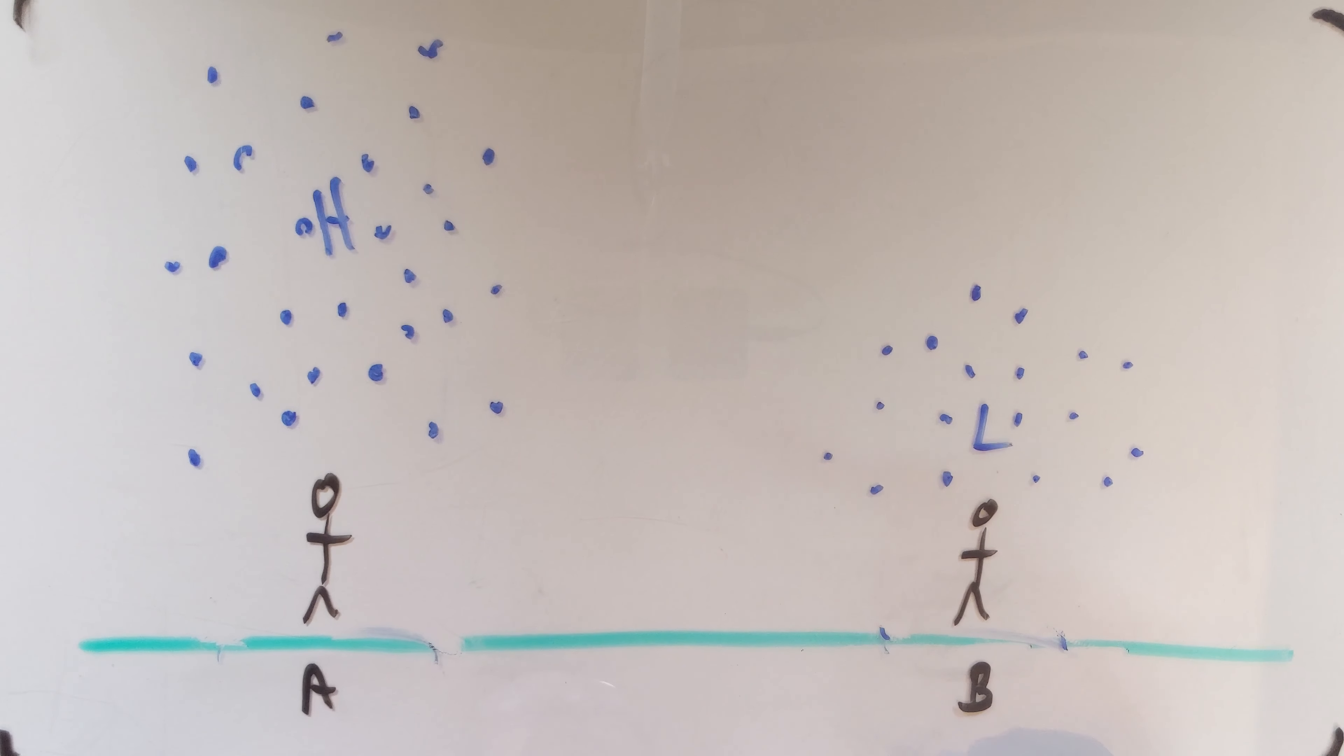The very basic thing is that winds will always move from high to low. So basically we can think of these as two piles. What wants to happen now is gravity is pulling both of these down.